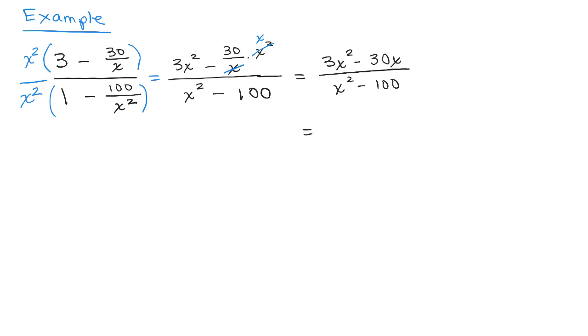Out of the numerator, the least common multiple is 3X. So that gives you 3X times X minus 10. And in the denominator, this is the difference of two squares. So that's X plus 10 times X minus 10.